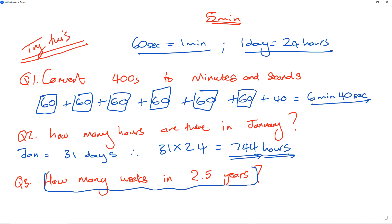The last question says, how many weeks in two and a half years? Well, there are 52 weeks in one year. So therefore, I've got to take two and a half years and multiply it by 52. Let's calculate this now.